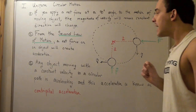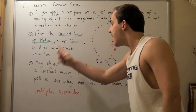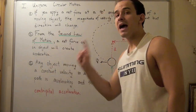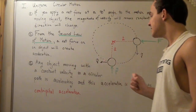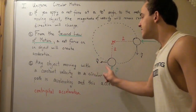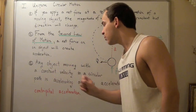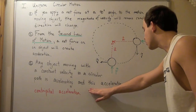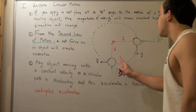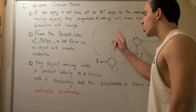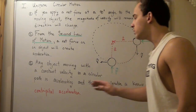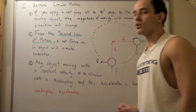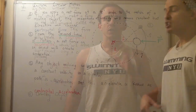Any object moving with a constant magnitude of velocity in a circular pathway is accelerating, and this acceleration is pointing inward. It's called centripetal acceleration.